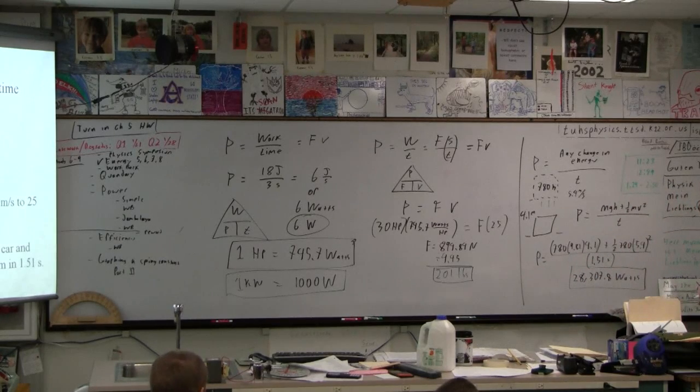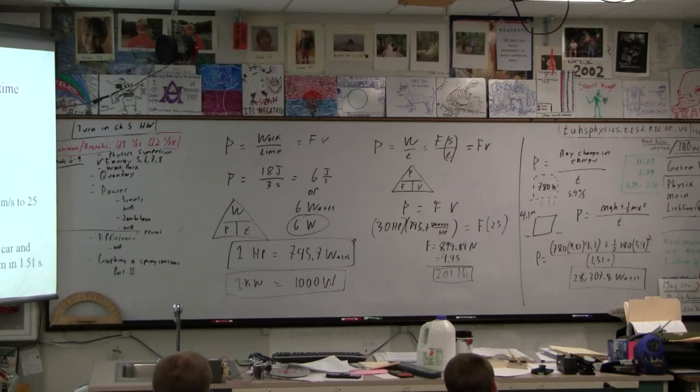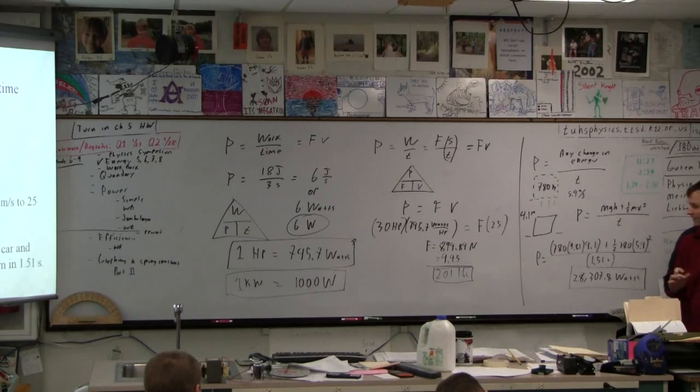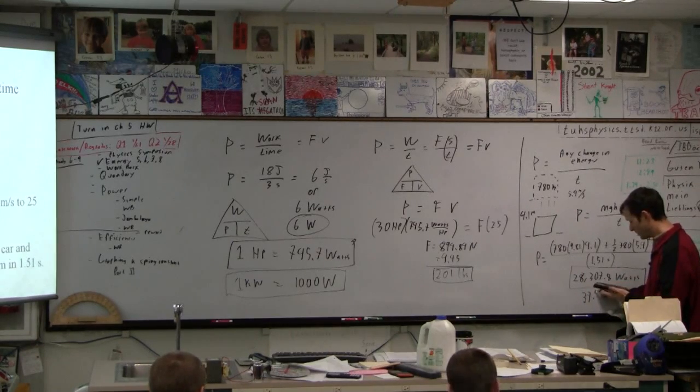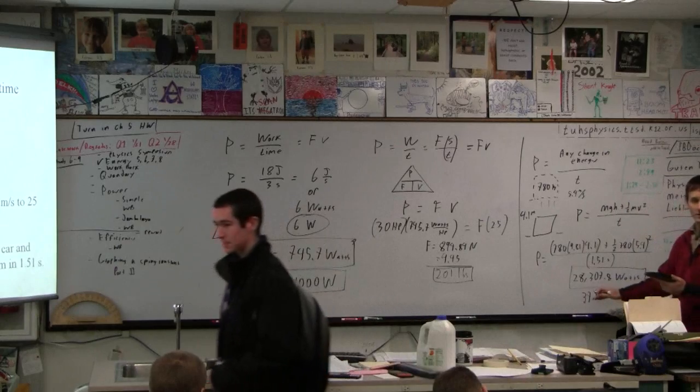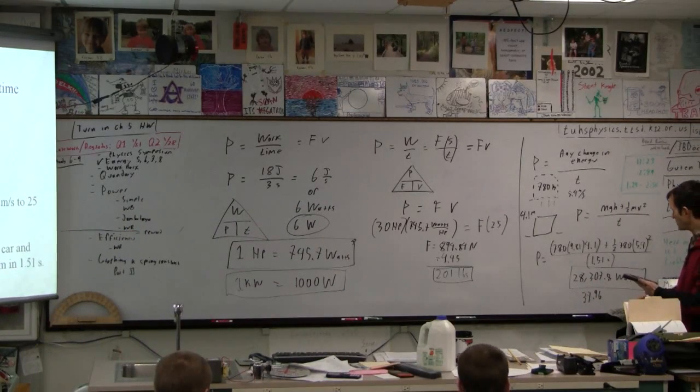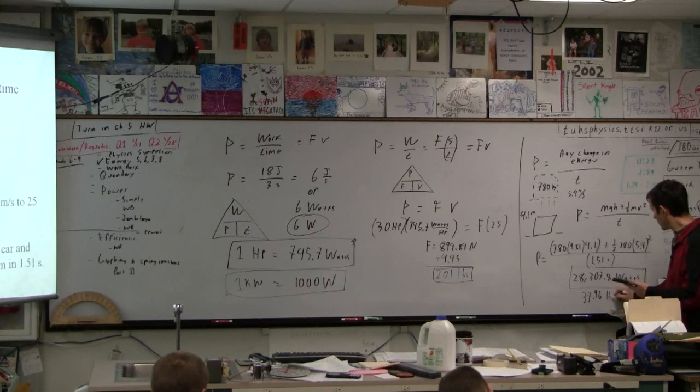And then of course you're in America, so you probably would want to turn that into horsepower. So I'm just going to divide by 745.7. That's 37.96. You don't generally do this, you're not going to do this for IB, I'm just throwing this out there. A 37.96 horsepower motor.